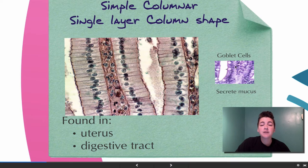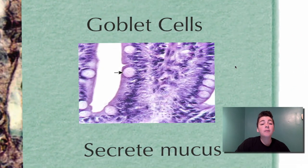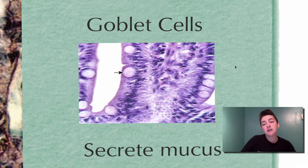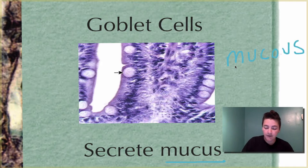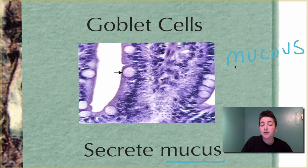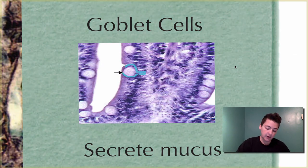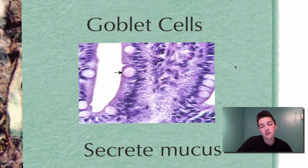Oftentimes in simple columnar, we find what are called goblet cells. Goblet cells secrete mucus. There are two types of spellings: mucus (the actual slimy substance) and mucous (the adjective describing the type of membrane that secretes the mucus). Goblet cells are cells that look like little goblets, and they hold and secrete mucus.